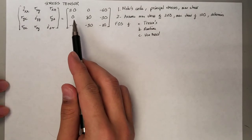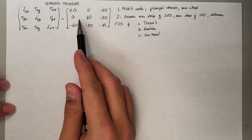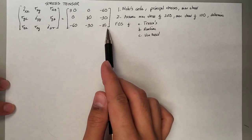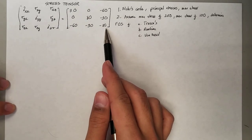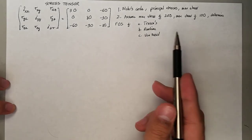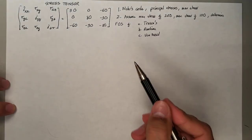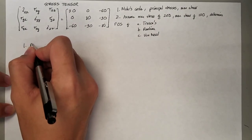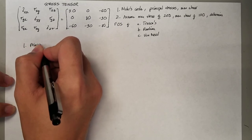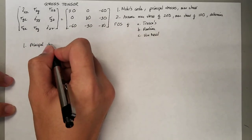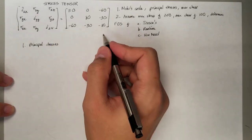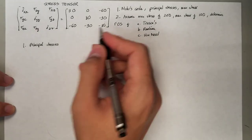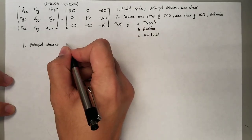Assume you are given this stress tensor definition having the following stresses and shears given in this 3x3 matrix. The first thing you have to do is determine the principal stresses. The principal stresses of this stress tensor are just going to be the eigenvalues of this matrix.